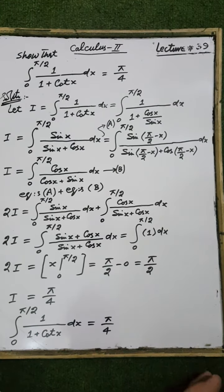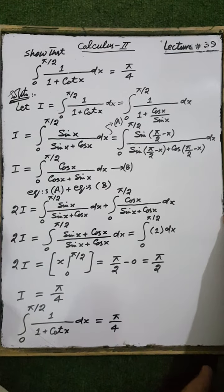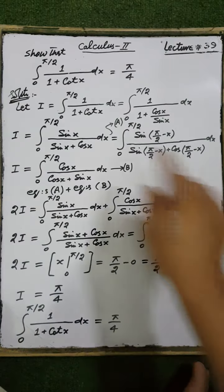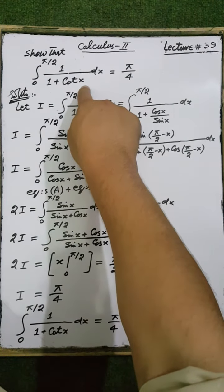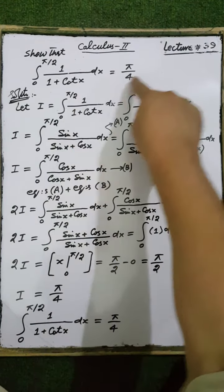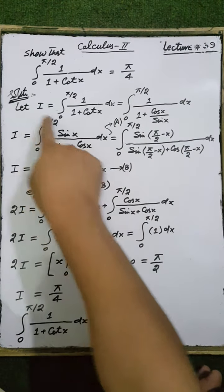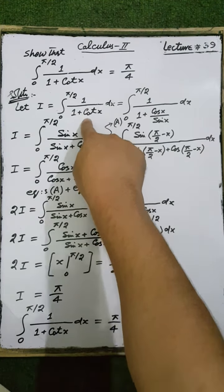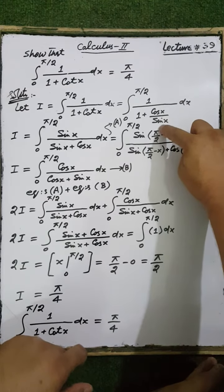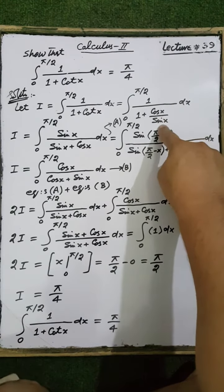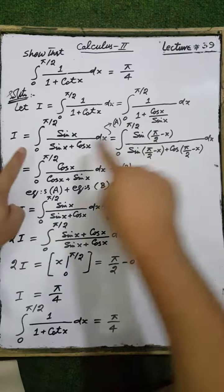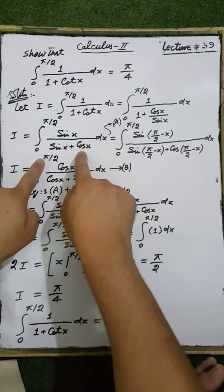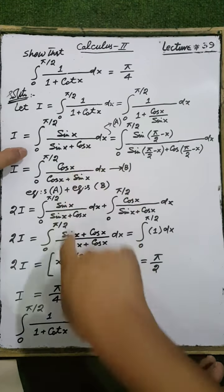Show that the integral from 0 to π/2 of 1 divided by (1 plus cotangent of x) is equal to π/4. Let I equal the integral from 0 to π/2 of 1/(1 + cot(x)) dx. To rearrange the integrand, cotangent of x equals cos(x) divided by sin(x), and after simplification we get sin(x) divided by (sin(x) plus cos(x)). This is equation number one.